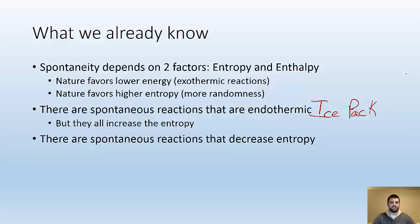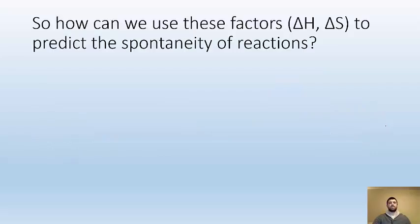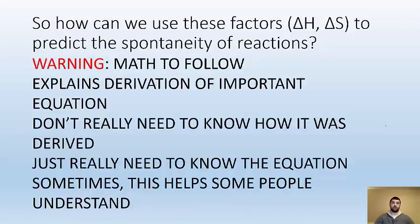There are also spontaneous reactions that decrease the entropy. Think about the previous examples where we're talking about rusting, so things become less chaotic, but they're still spontaneous. How's that possible? Well, they're all exothermic. So we know that these two factors play a role. How can we use these factors, the change in heat ΔH and change in entropy ΔS, to predict the spontaneity of reactions? Got a reaction, is it going to be spontaneous? How do we figure that out?